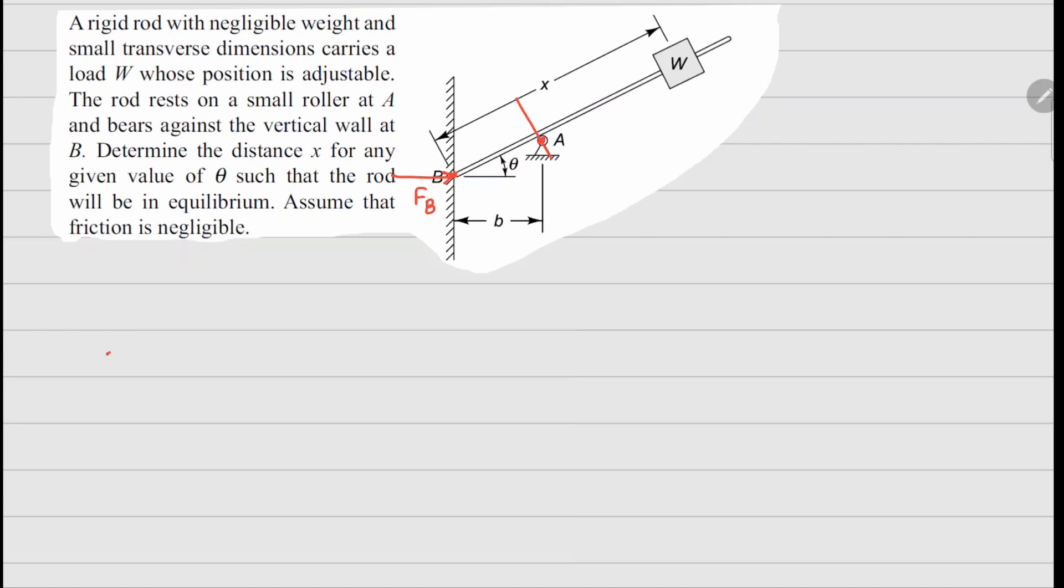Similarly, at this point the mutually perpendicular line is going to be this way. This is going to be FA, and then there is the weight W acting downwards.